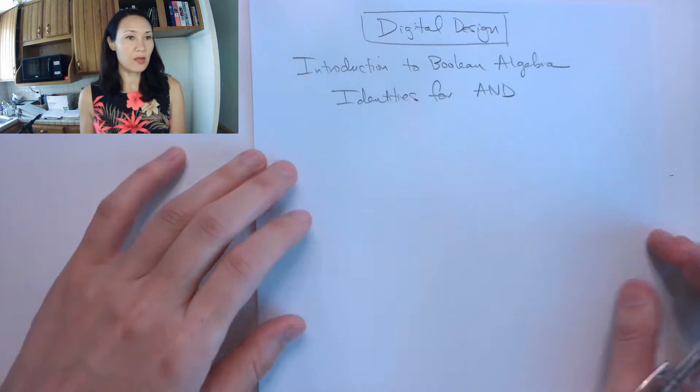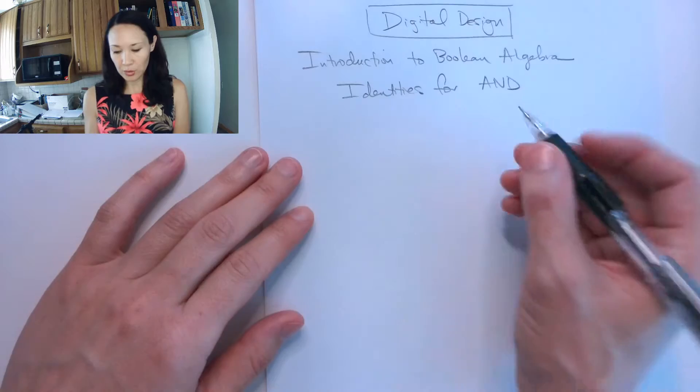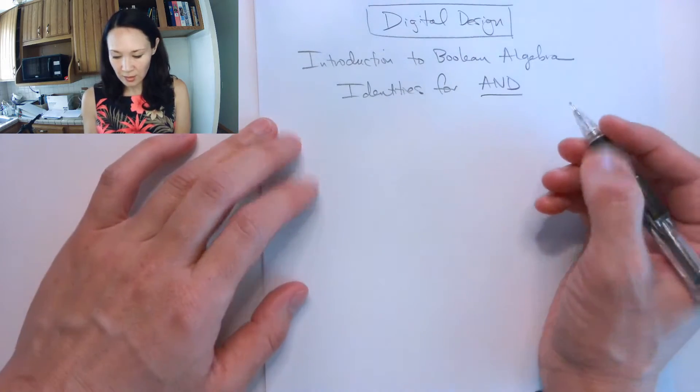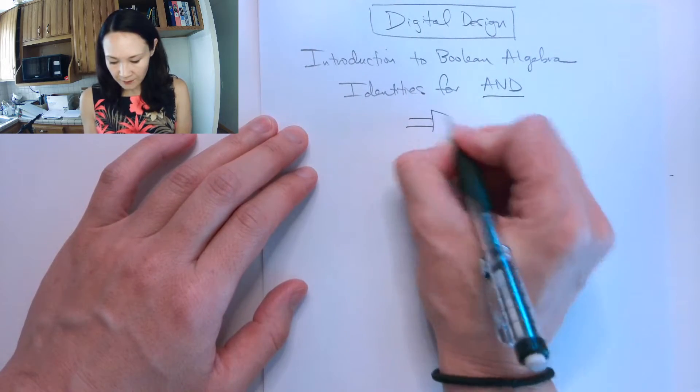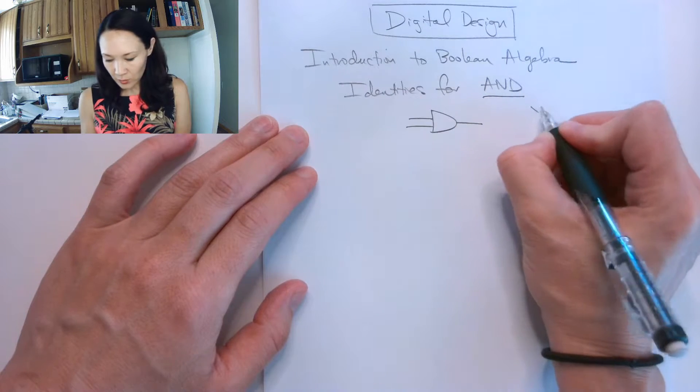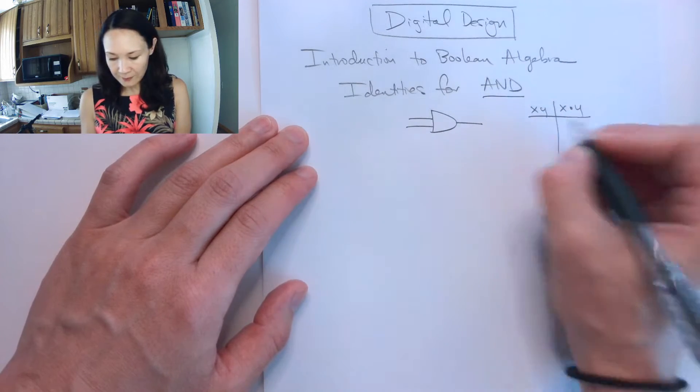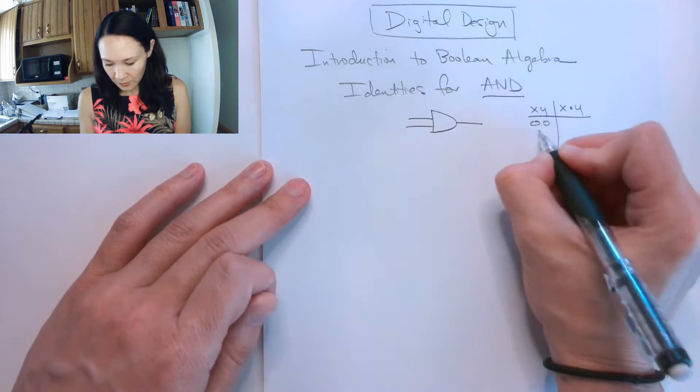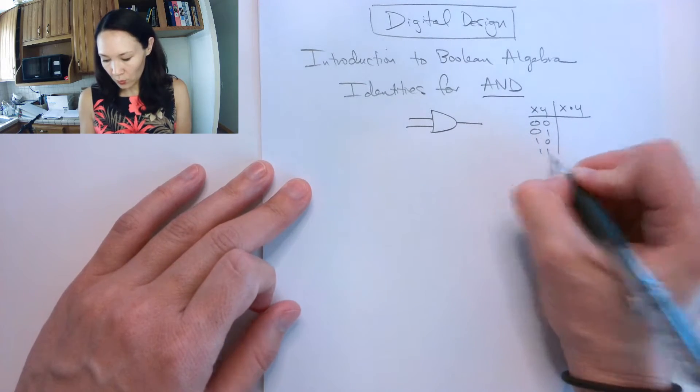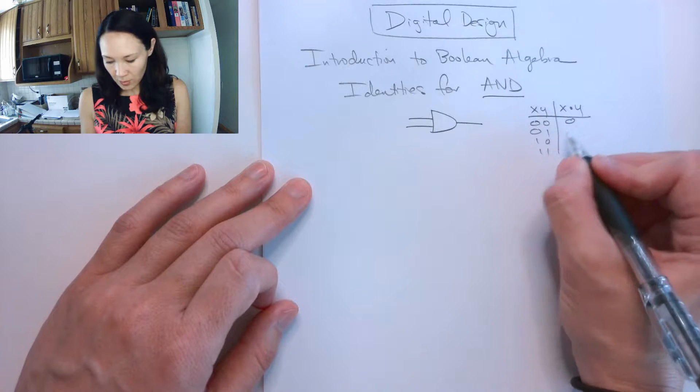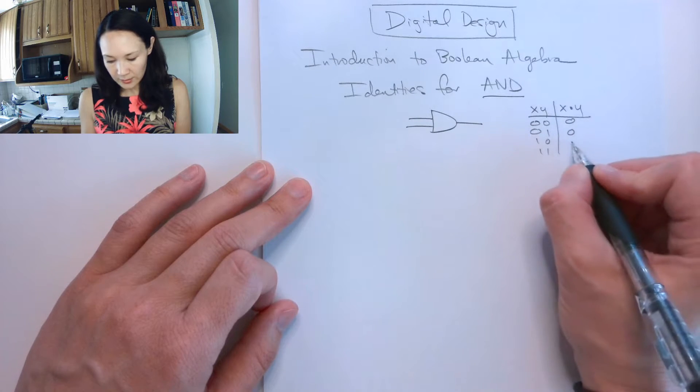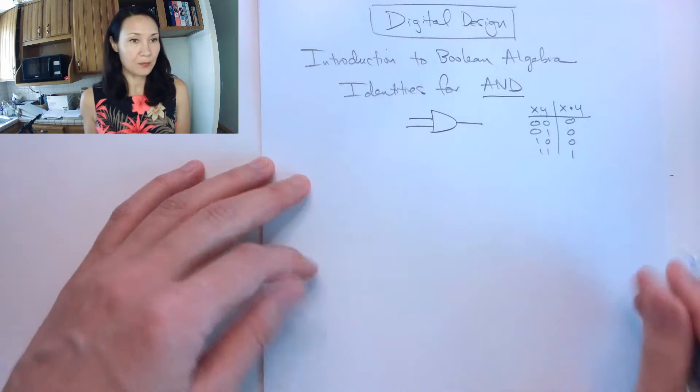I'd like to introduce the theorems and postulates for Boolean algebra for the AND function. We've seen the AND logical gate and know the truth table for x and y. It goes like this: 0 and 0 is 0, 0 and 1 is 0, 1 and 0 is 0, 1 and 1 is 1.